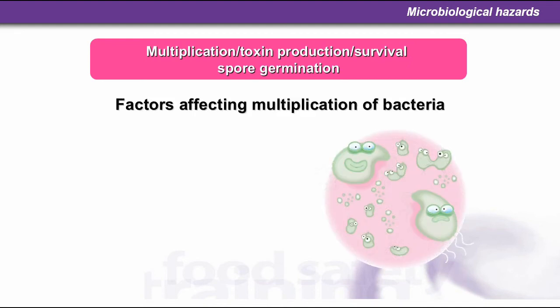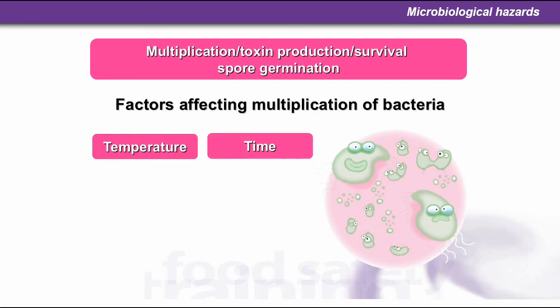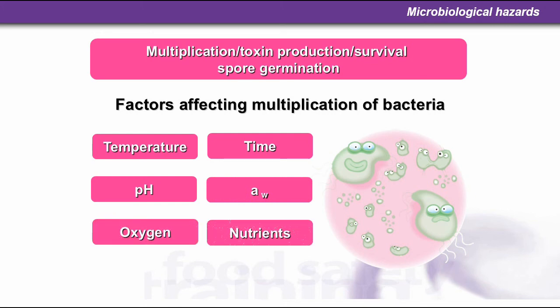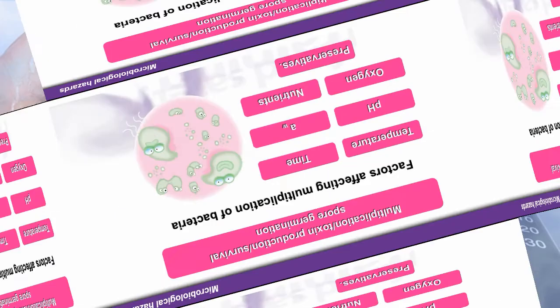Factors affecting the multiplication of bacteria include: temperature, time, pH — the level of acidity or alkalinity — Aw, which is the availability of water and moisture, oxygen, available nutrients, and preservatives.